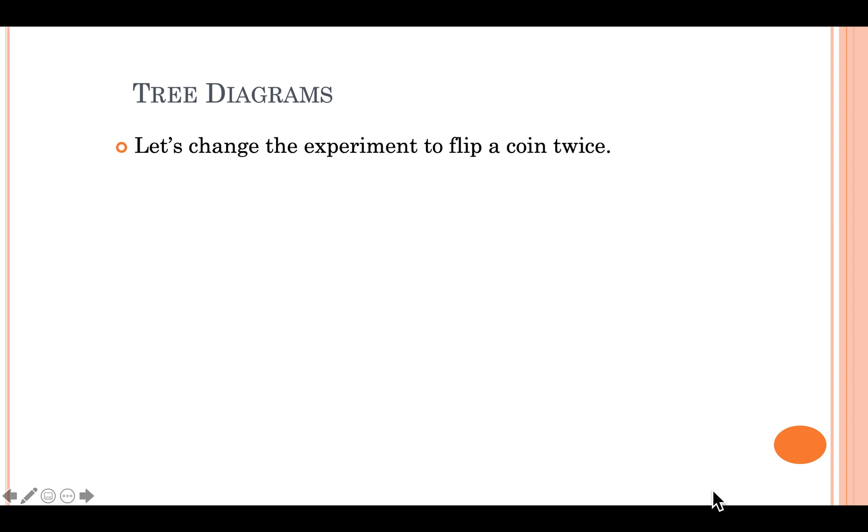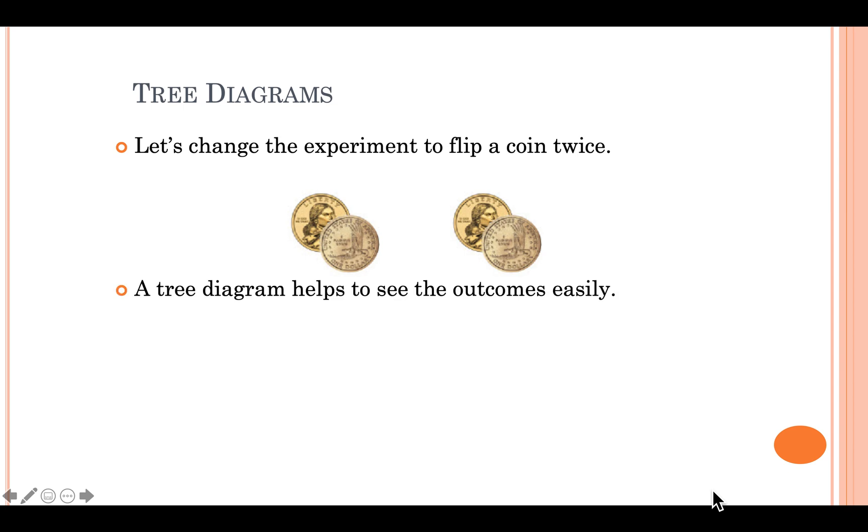We can choose to flip the coin twice and build an experiment on flipping the coin twice. So again, we have two sides. In one coin flip, there are two outcomes. And in two coin flips, it changes. There are more than two outcomes. Let's take a look at what happens. When you build a tree diagram, you start with the first event, which is flipping the coin once.